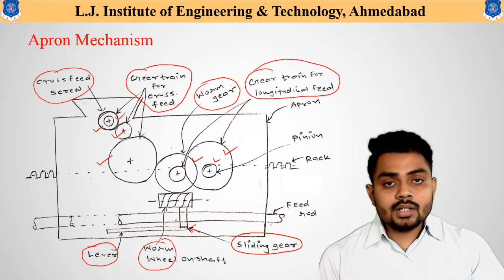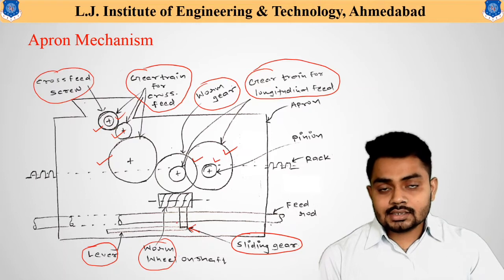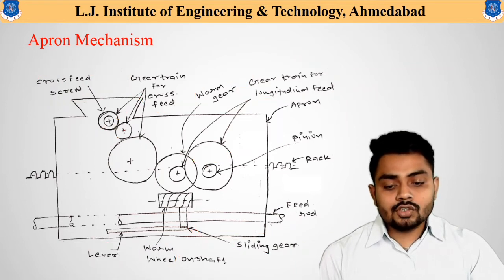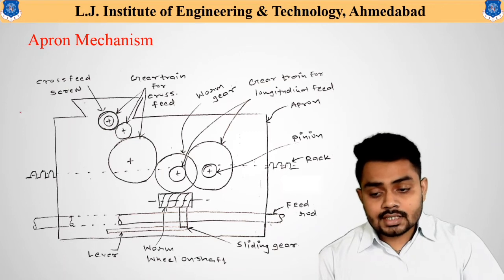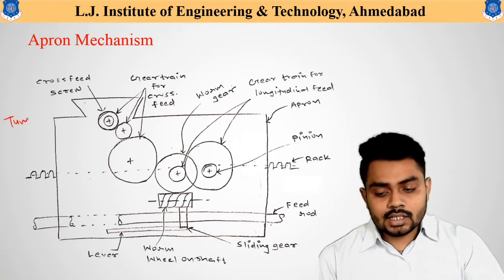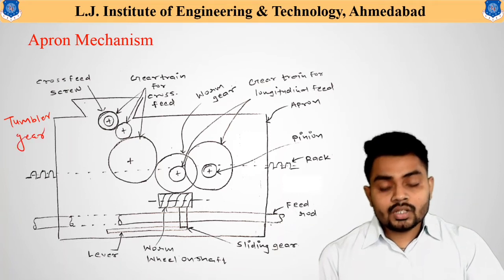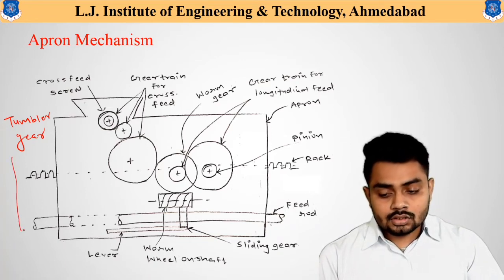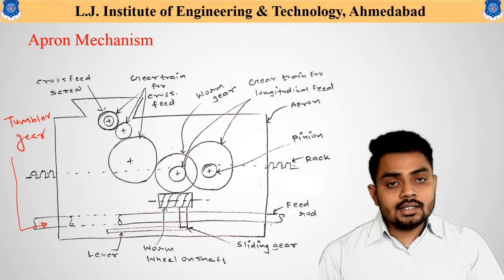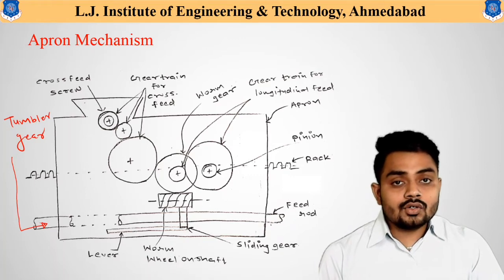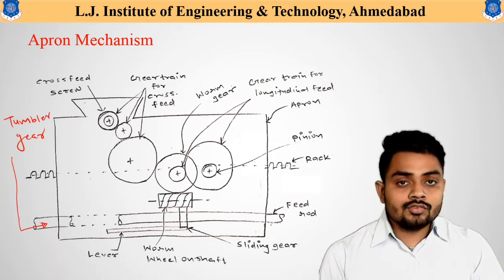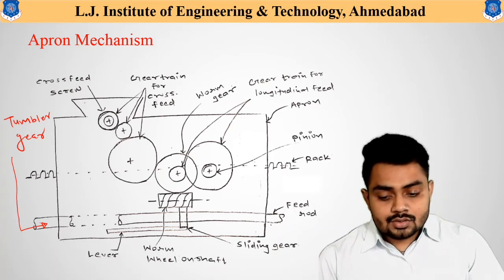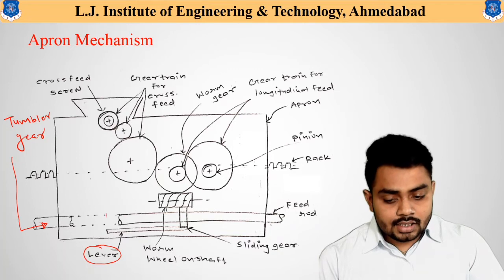Now that we understand the parts, let us understand how the apron mechanism operates. The tumbler gear arrangement at the headstock end transmits motion from the spindle to the feed rod, causing the feed rod to rotate automatically. This automated movement of the feed rod is provided using the tumbler gear mechanism.